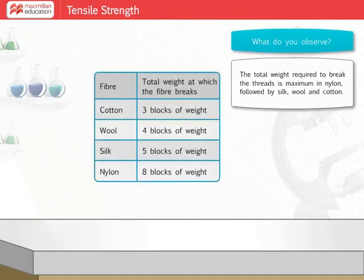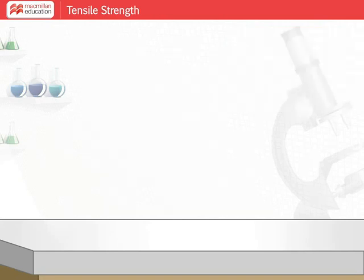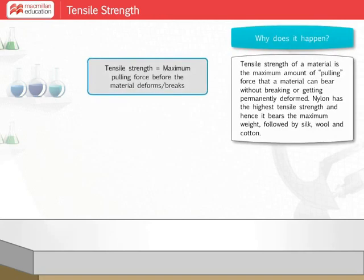You will find that the total weight required to break the threads is maximum in nylon, followed by silk, wool, and cotton. Tensile strength of a material is the maximum amount of pulling force that a material can bear without breaking or getting permanently deformed.